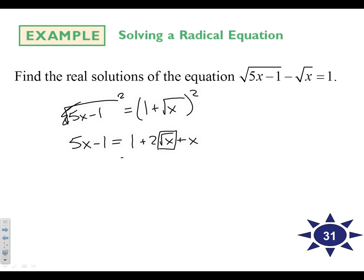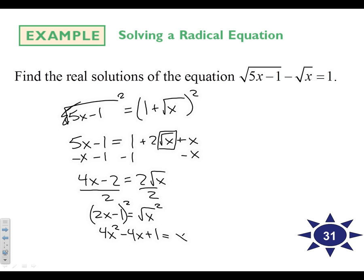Let's get that isolated. Move everything else over. 4x minus 2 equals 2 root x. And we can actually make this simpler by dividing by 2. And now let's square both sides. So we've got 4x squared minus 4x plus 1 equals x. And at this point, unfortunately, this doesn't factor cleanly, so we need to do the quadratic.